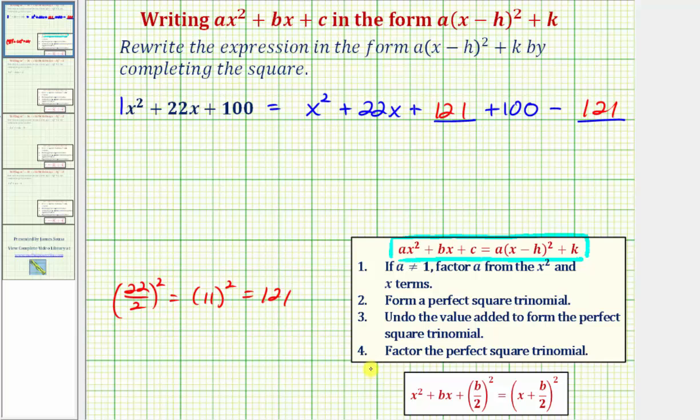And finally step four we want to factor the perfect square trinomial so we want to factor this trinomial here. And it'll always factor into x plus b divided by two squared where b divided by two would be 11. So we are going to have the quantity x plus 11 squared. Let's go ahead and show the work anyway.